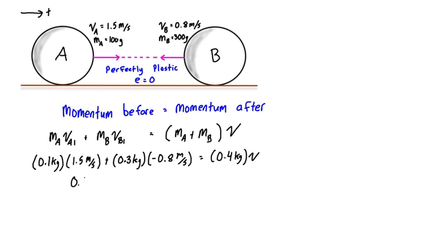We can simplify this. We're going to have 0.15 kilogram meters per second minus 0.24 kilogram meters per second equals 0.4 kilograms times that velocity. The left-hand side simplifies to negative 0.09 kilogram meters per second, and the right side stays unchanged.